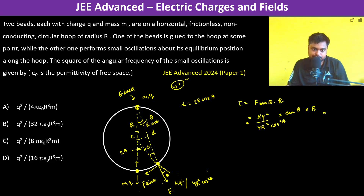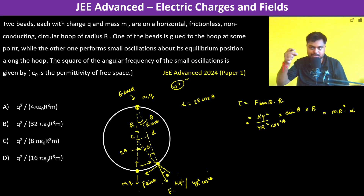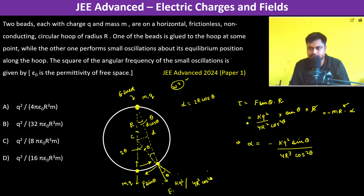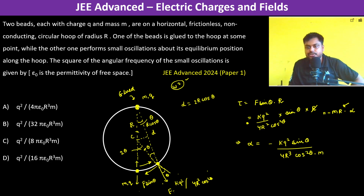Setting torque equal to Iα, where I = mR², we get mR²α = kQ²R sinθ/(4R² cos²θ). Since displacing the bead anti-clockwise produces a clockwise restoring torque, we introduce a minus sign: α = −kQ² sinθ/(4R³ cos²θ · m).